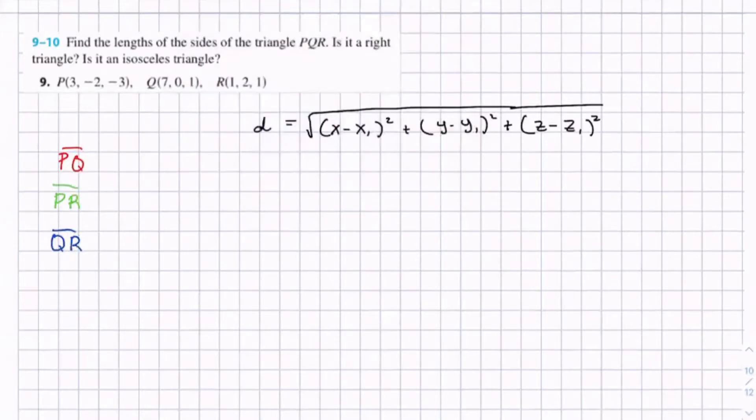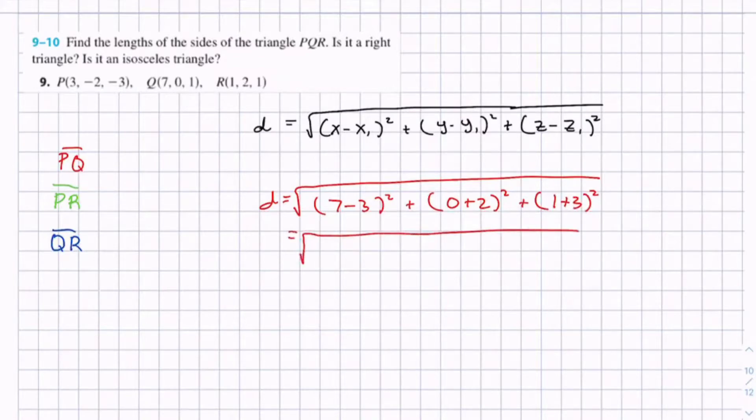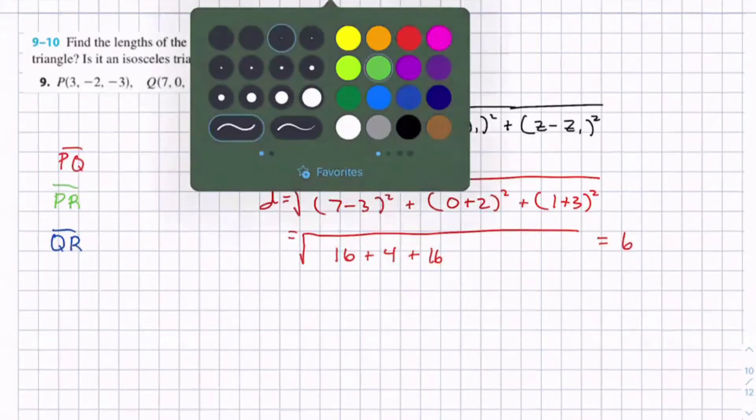For PQ, d equals (7 - 3)² plus (0 - (-2))² plus (1 - (-3))². This equals 4² which is 16, plus 2² which is 4, plus 4² which is 16, which equals the square root of 36, which is 6.